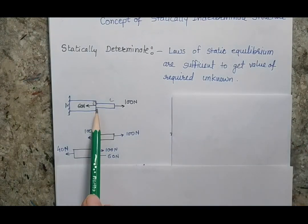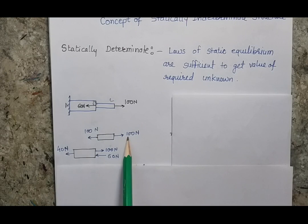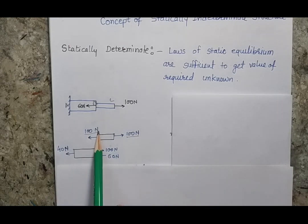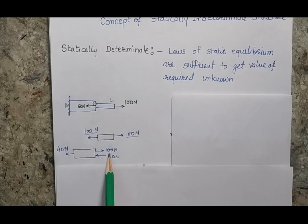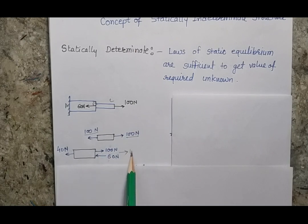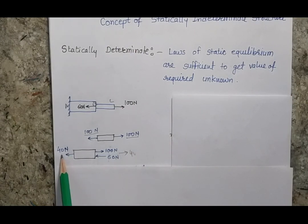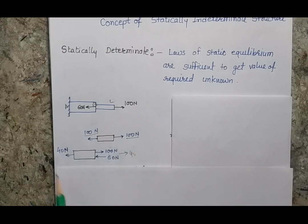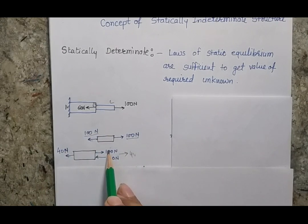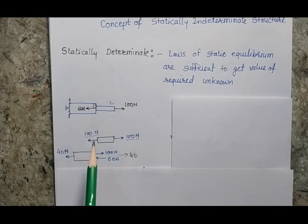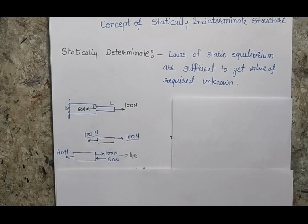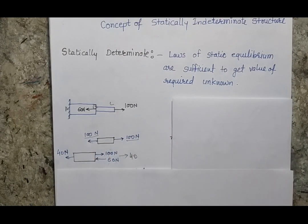For example, I can make the free body diagram of two sections. For one section there will be a 100 N force, and this 100 N force will also appear in the next section. With an additional 60 N force, the subtraction of these two will give a new force of 40 N in that direction. I have already discussed this in my previous lecture. After making the free body diagram, I am able to get the forces in each member.